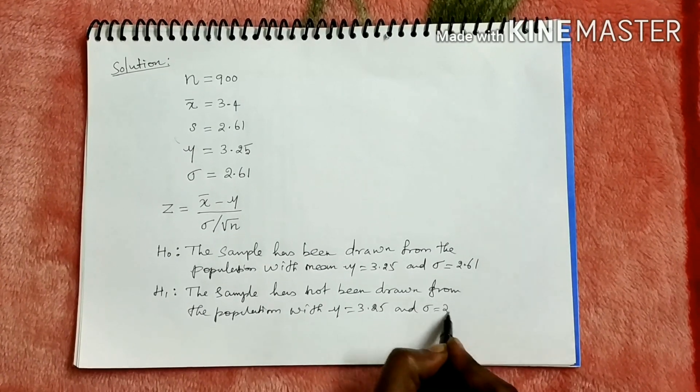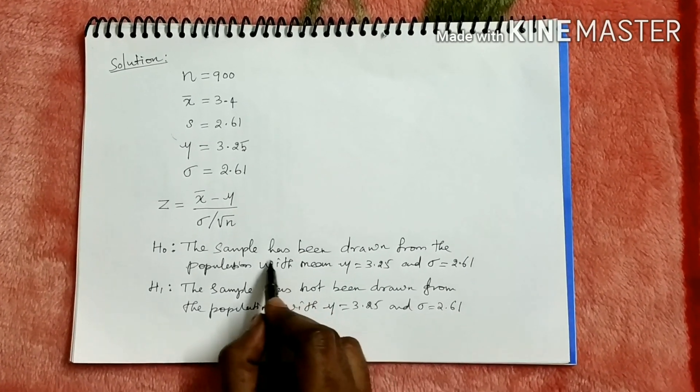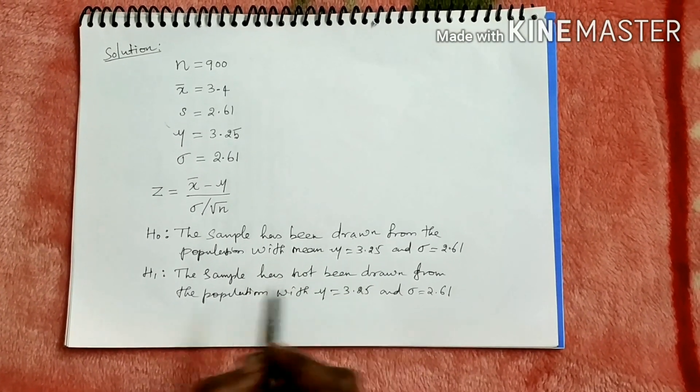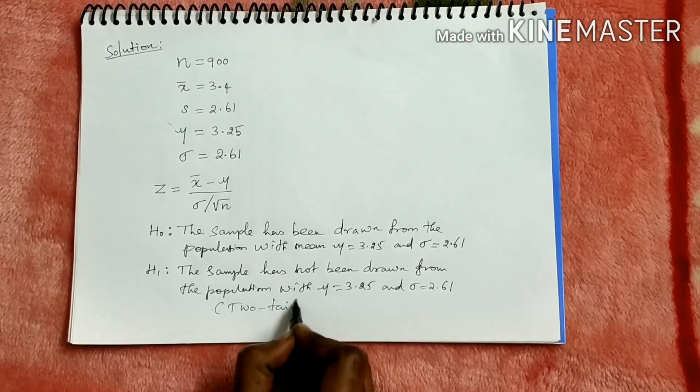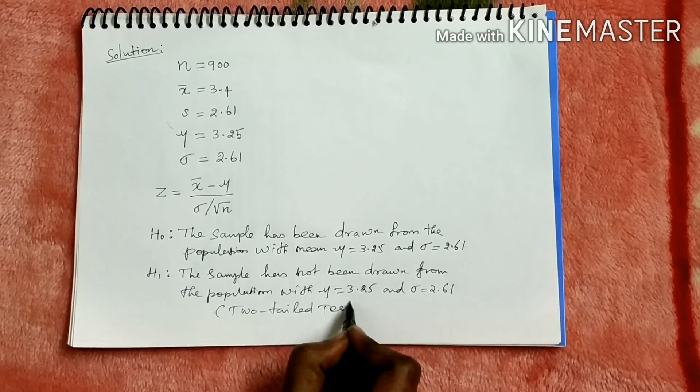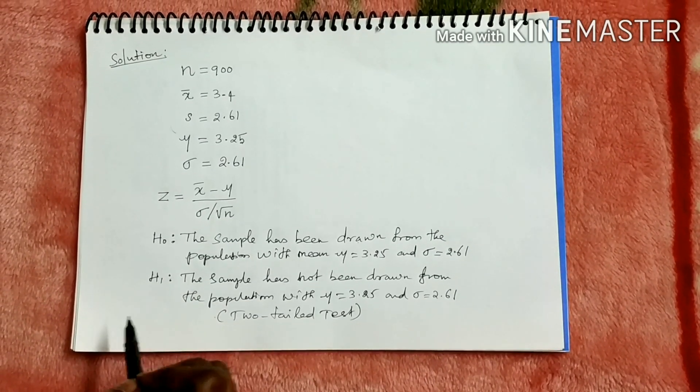And sigma 2.61 cm. This has been drawn versus has not been drawn. Of course it is a two tail test. So at the end we will come to know which claim is true.